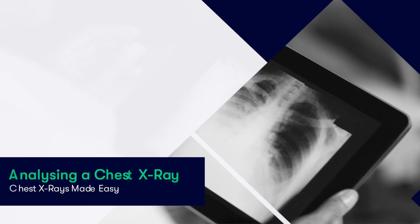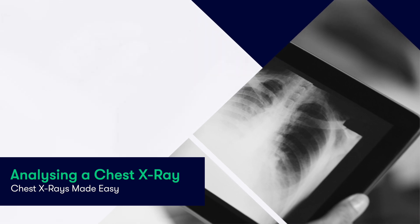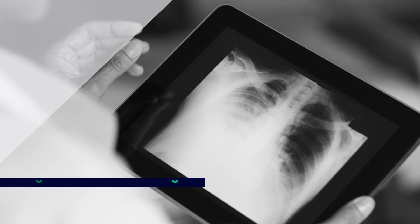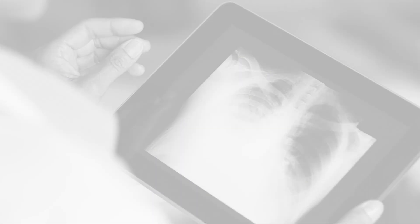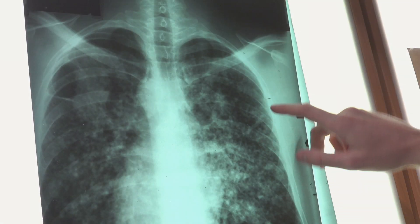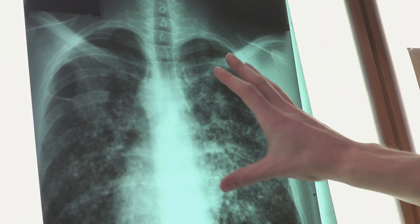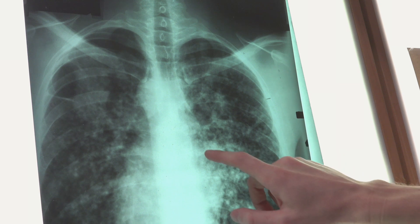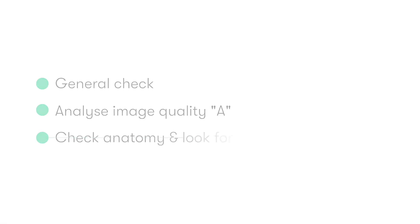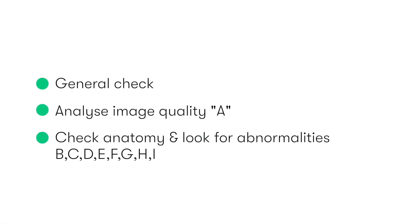Moving on to how we analyse chest x-rays, the first thing we need to do is perform a general check. Then we need to analyse the quality of the image, and follow this by looking at the anatomy and attempting to identify any abnormalities. The quality assessment and anatomical review can be remembered together using the mnemonic A, B, C, D, E, F, G, H, and I, which we'll discuss in detail very shortly.